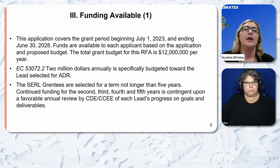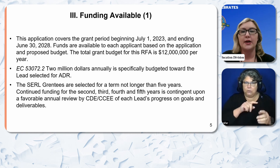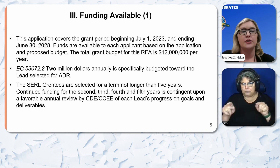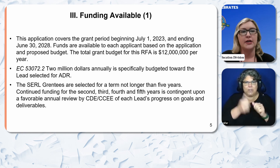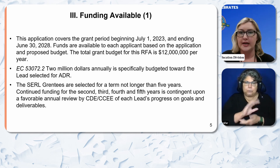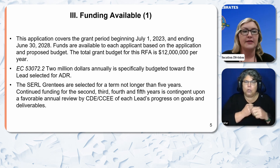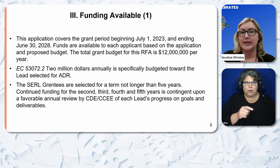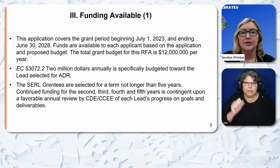Funding Available: This application covers the grant period beginning July 1, 2023, and ending June 30, 2028. Funds are available to each applicant based on the application and proposed budget. The total grant budget for this RFA is $12 million per year. $2 million annually, per EC 52073.2, is specifically budgeted toward the lead selected for ADR. The SERL grantees are selected for a term not longer than five years.